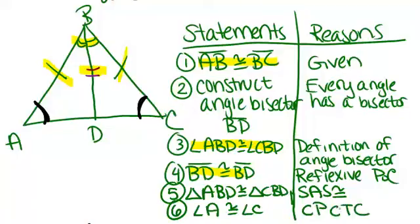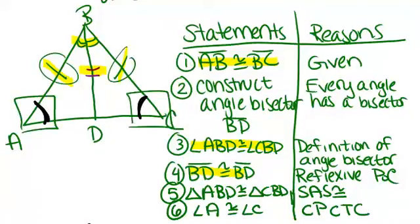So what we've just shown there is starting with just some random isosceles triangle, given that the two sides are congruent, the two base angles have to be congruent.